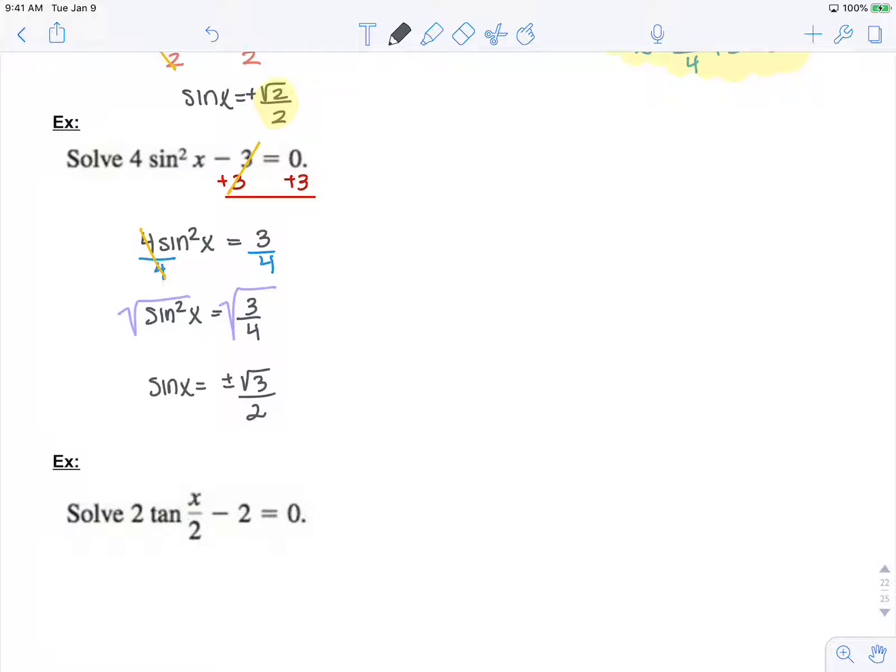So now I'm looking for where sine is both positive and negative. That's going to include all quadrants. Now, that'll be here, here, here, and here.